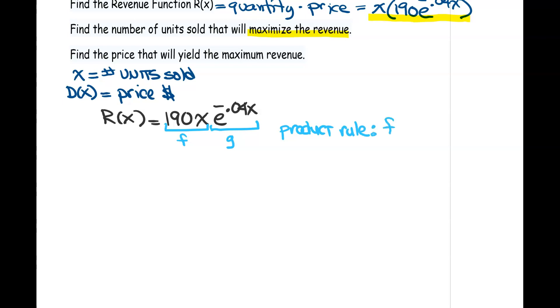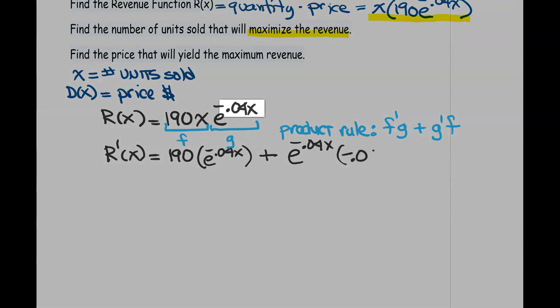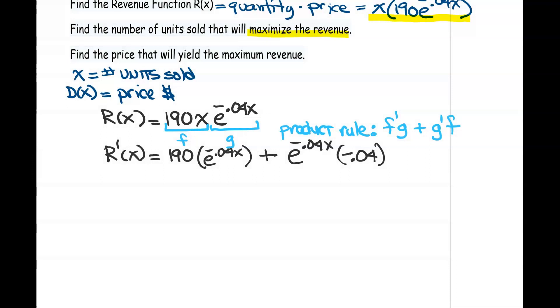A reminder, I use the product rule this way: f prime times g plus g prime times f. Getting our derivative of our revenue using our product rule, starting with the derivative of f, which will just be 190, multiply that by g, which is this exponential function, plus the derivative of g. So the derivative of this e is the same thing, e^(-0.04x), but multiplied by the derivative of this inside, which would be -0.04, and then multiplied by f, which is 190x. So there's our big product rule.